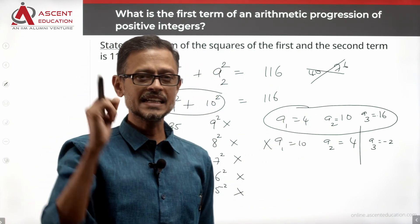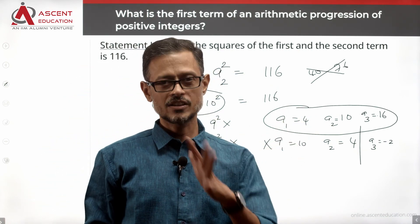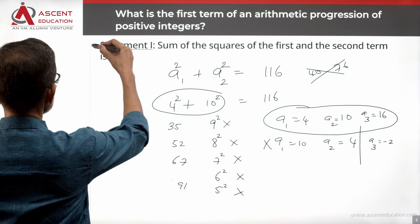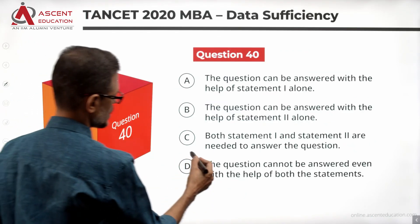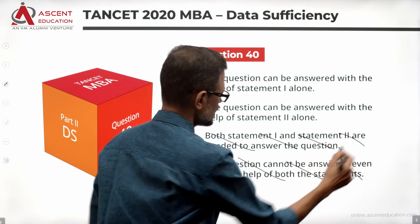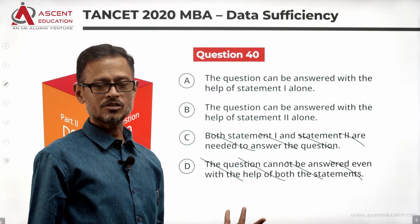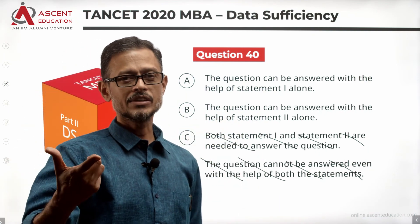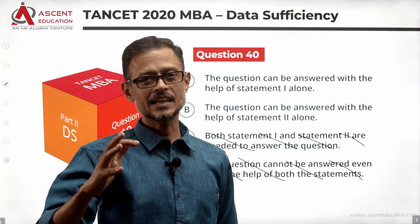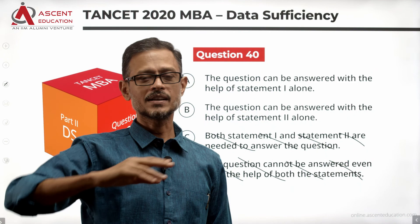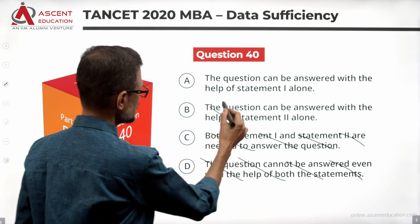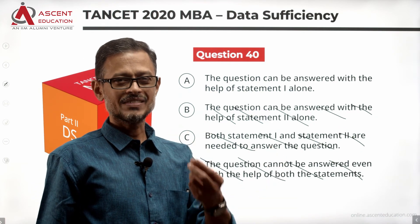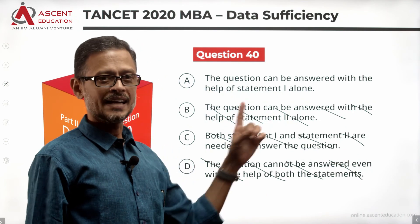So essentially, we have clear indication that the first term of this arithmetic progression is 4. So statement 1, are we able to find a unique value? Yes, we have been able to find a unique value. Statement 1 alone is sufficient. So in answer options, D will be out, C will be out. It cannot even be B. Because B is for statement 2 alone. There is no answer option which says each independently can. So statement 1 will answer the question. We will check out whether statement 2 is not sufficient, just for learning purpose, and close this video. Answer is A for this question.